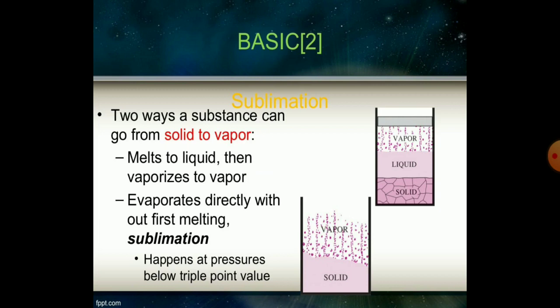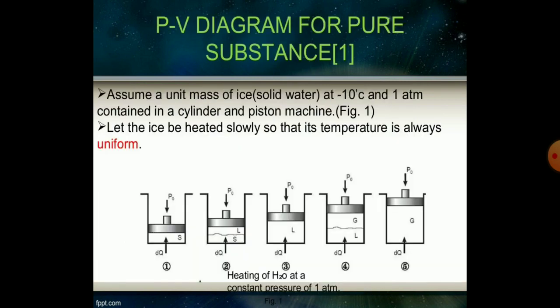There are two ways a substance can go from solid to vapor: it can melt to liquid first and then vaporize, or it can go directly from solid to vapor through sublimation, which occurs at pressures below the triple point. Now we consider the PV diagram for a pure substance.